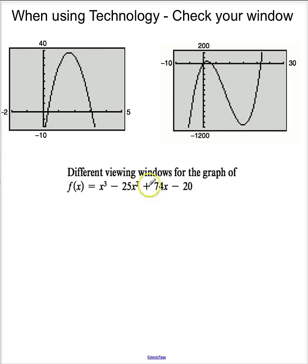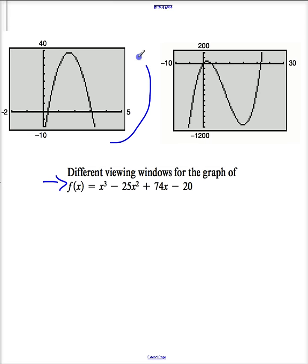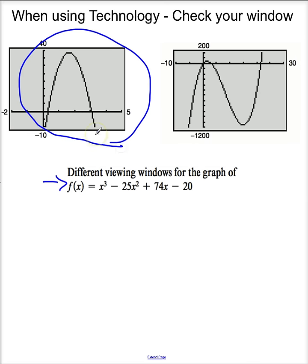You've typed f of x is x cubed minus 25x squared plus 74x minus 20 in your calculator and it gives you this. All right, you're going to think it has one maximum and two zeros and you will lose most of your points because your window is too small.